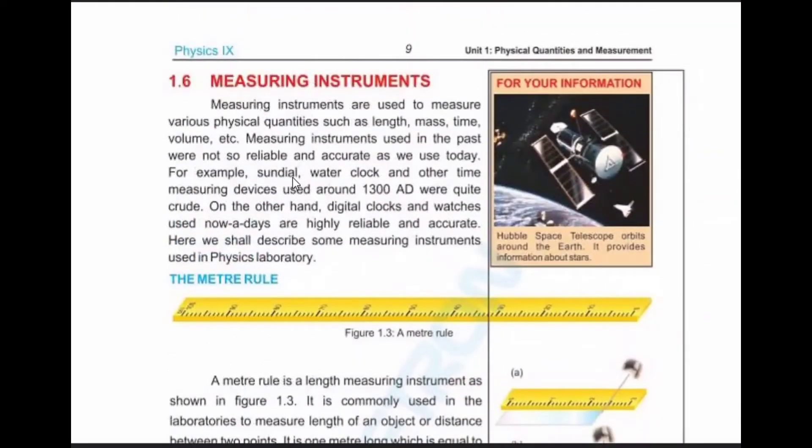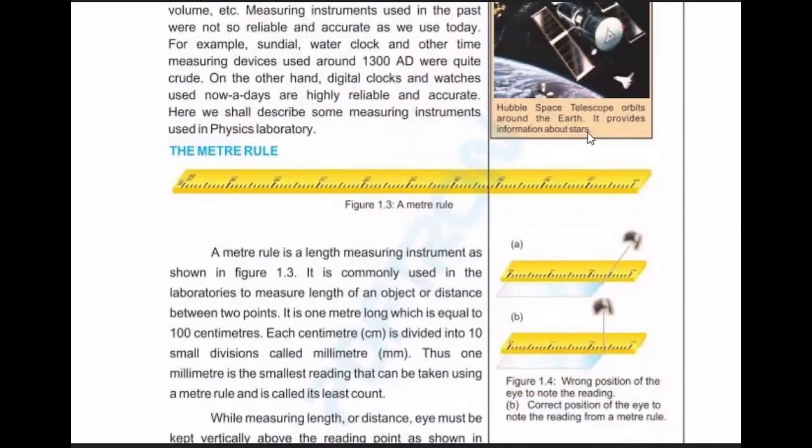For example, sundials, water clocks and other time-making devices used around 1380 AD were quite crude. In the past we used such devices, but today we have much more accurate instruments.